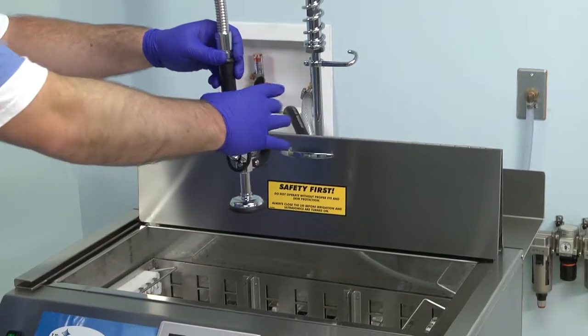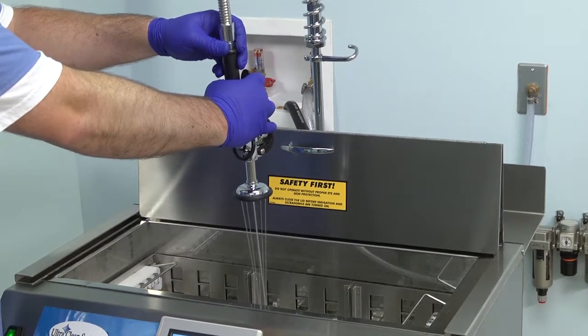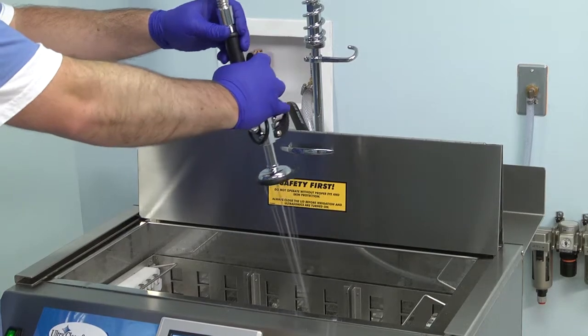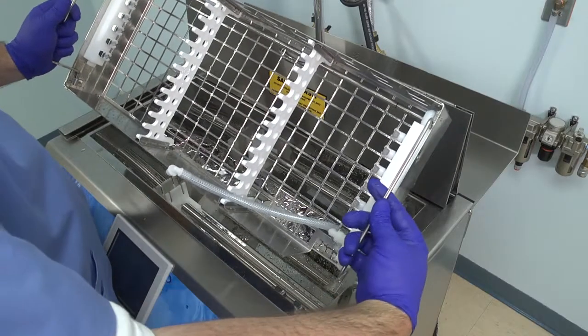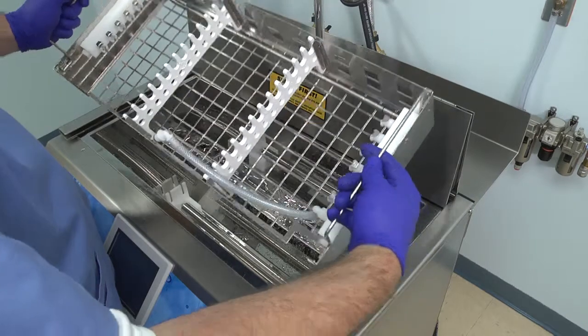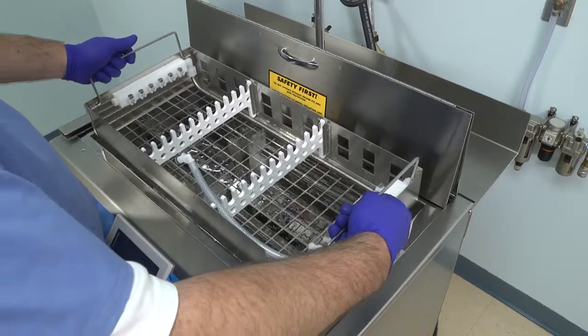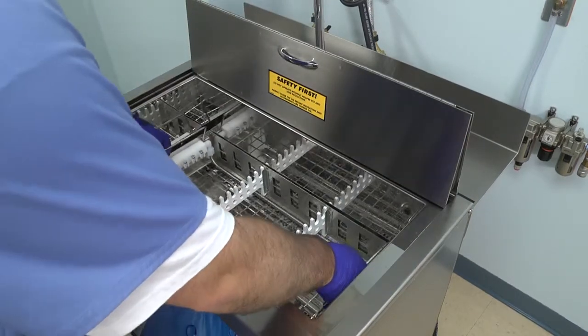For details on how to properly load instruments into the baskets, refer to the basket loading video. Once the trays are loaded, insert the bottom tray with the port cutout on the right side as you are facing the machine. This tray should sit flat with nothing touching the rod on the bottom.